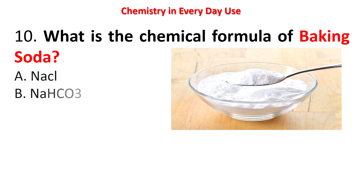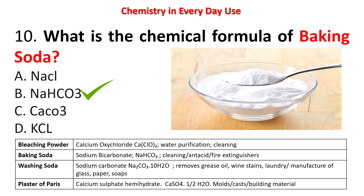Next question: what is the chemical formula of baking soda? Options: NaCl, NaHCO3, CaCO3. The answer is NaHCO3. Other important formulas to remember: bleaching powder (calcium oxychloride) is CaClO2, used for water purification and cleaning; baking soda (sodium bicarbonate) NaHCO3 is used for cleaning, antacids, and fire extinguishers; washing soda (sodium carbonate) is Na2CO3·10H2O, used for removing grease, oil, and wine stains; plaster of Paris (calcium sulfate hemihydrate) is CaSO4·½H2O, used in molds and building materials.